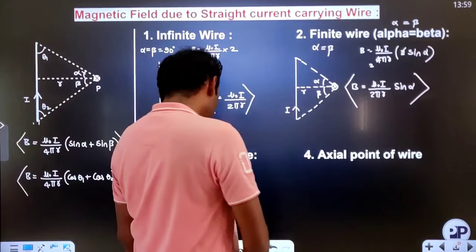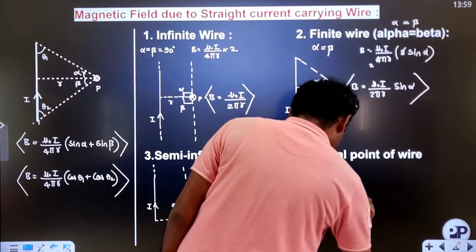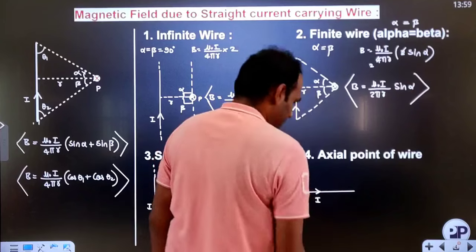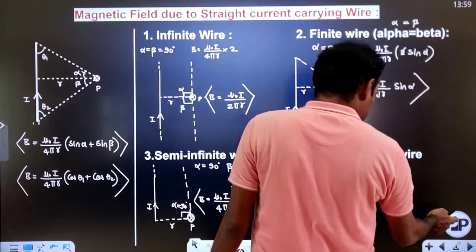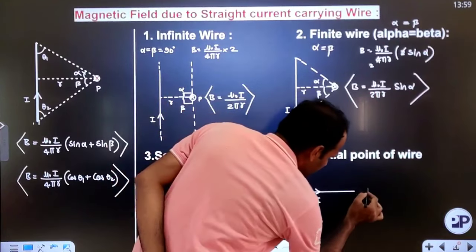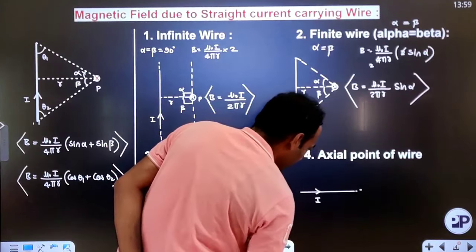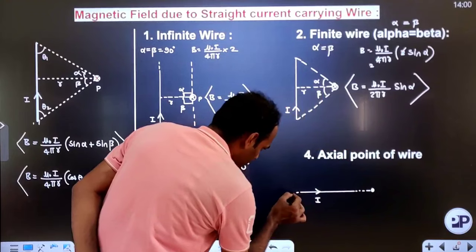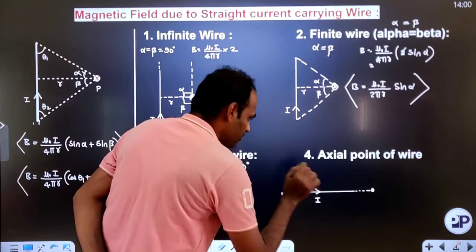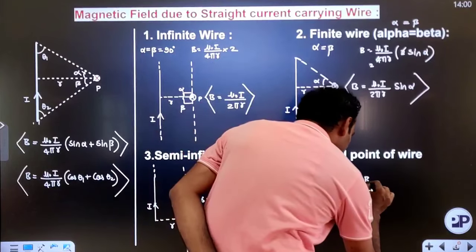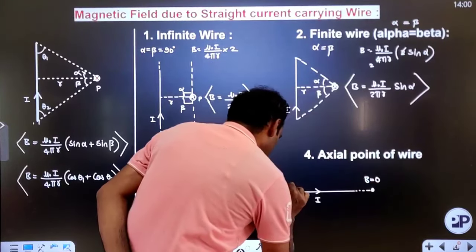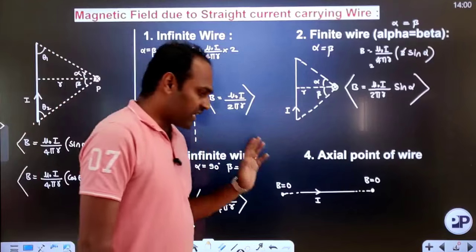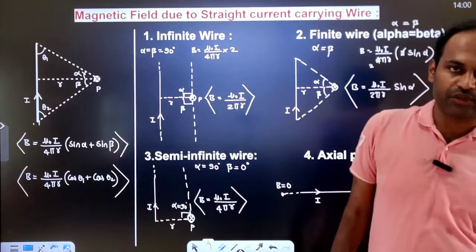For an axial point of the wire — that is, a point lying along the length of the wire, either in front of or behind the direction of current — the magnetic field is zero. Remember these standard cases as they form the basis for solving many MCQs.